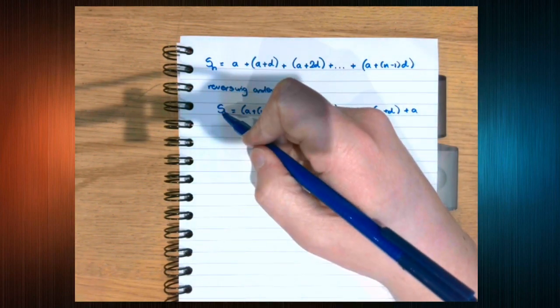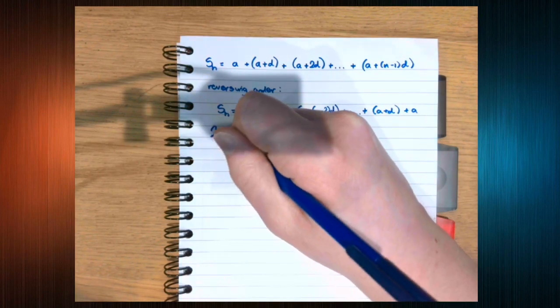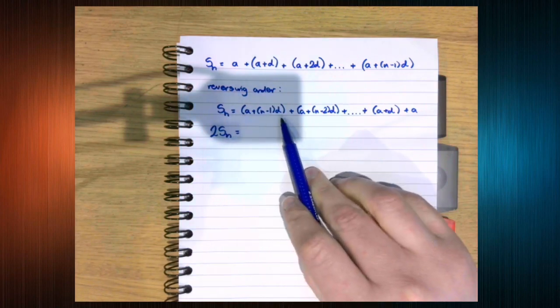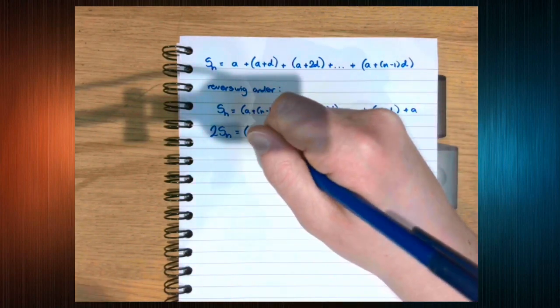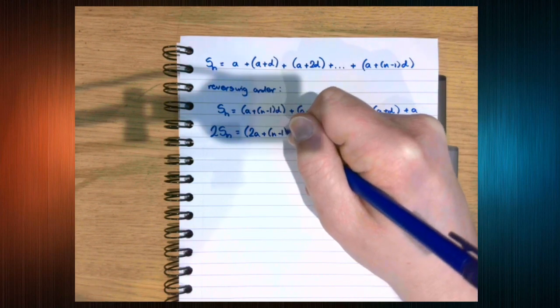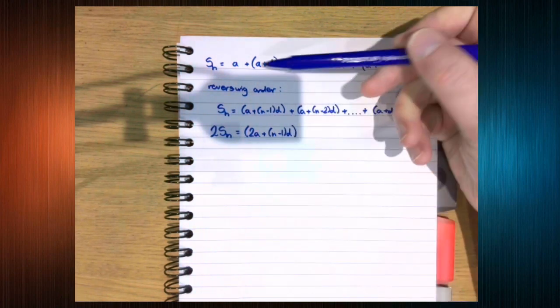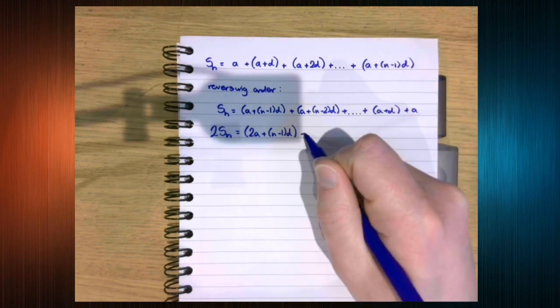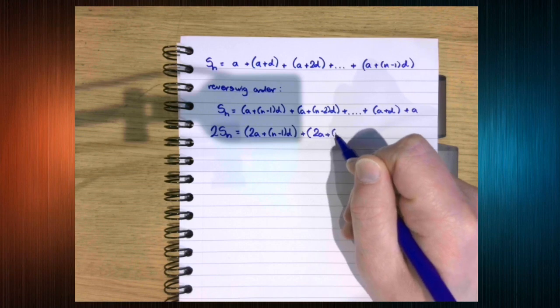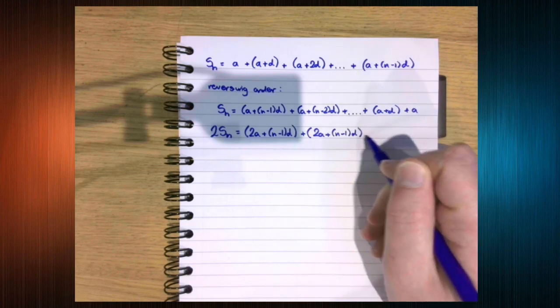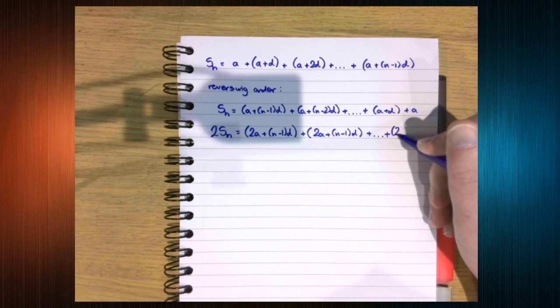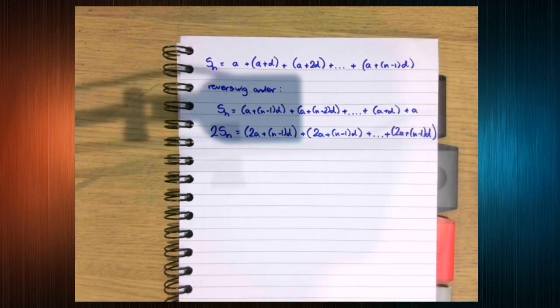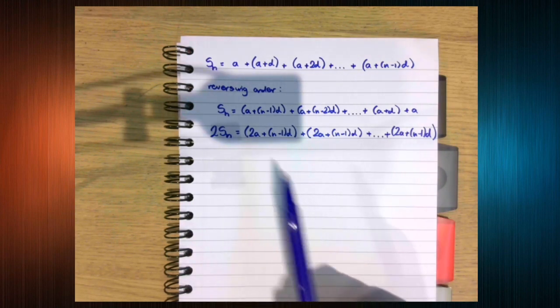So Sn plus Sn is 2Sn, which equals a plus a plus n minus 1, d. So a plus d plus a plus n minus 2, d is the same thing. And this is the point. We get the same thing every time. Now, how many of these do we have?